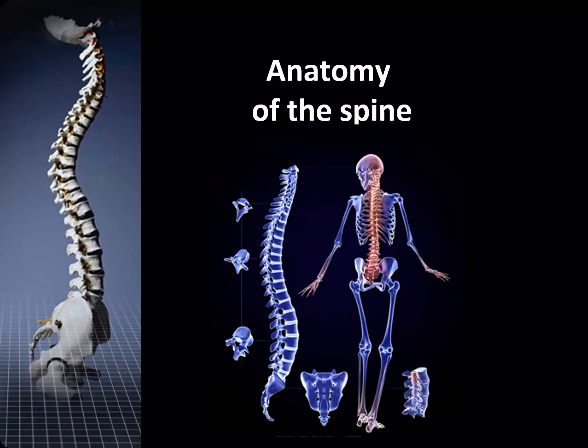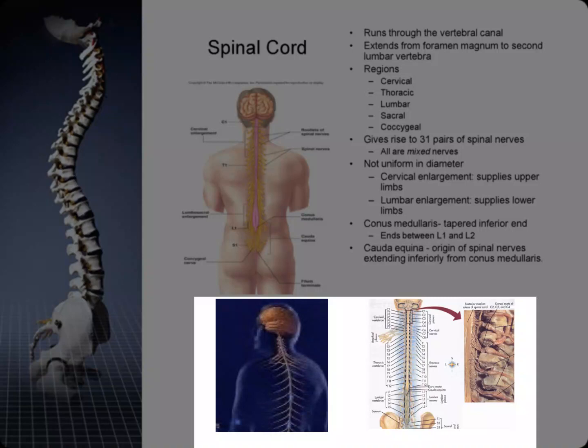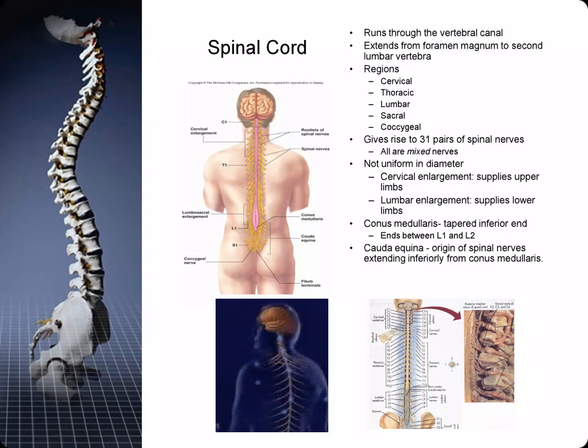Let's take a few minutes to review the anatomy of the spine. Prior to looking at the skeletal anatomy, let's look at the central nervous system and specifically the spinal cord, which is protected by the spine. The spinal cord goes through the spinal canal. We have 31 pairs of spinal nerves and they are mixed nerves. The nerves are not uniform in diameter; the cervical enlargement supplies the upper limbs while the lumbar enlargement supplies the lower limbs. And finally we have the cauda equina.